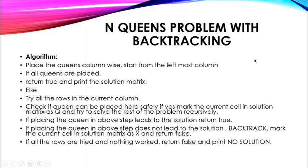N-queens problem with backtracking. The algorithm places queens column by column, starting from the leftmost column. If all queens are placed, return true and print the solution matrix. Otherwise, try all rows in the current column and check if a queen can be placed safely. If yes, mark the current cell in the solution matrix as Q and try to solve the rest of the problem recursively.